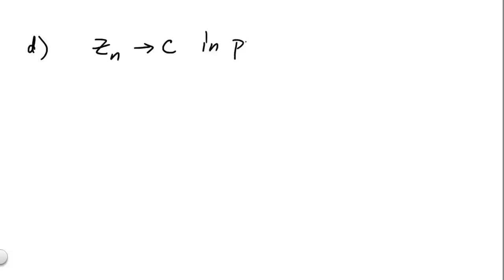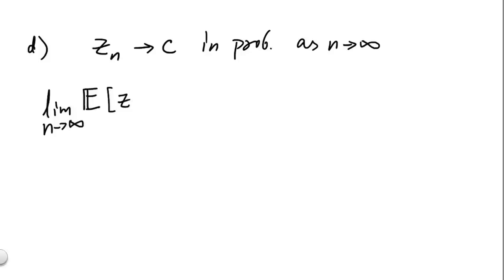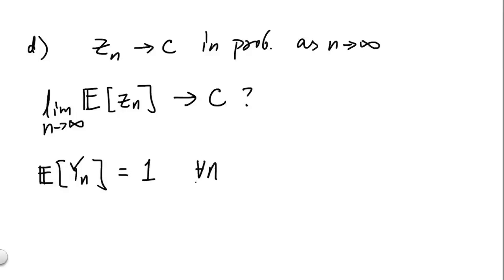For part d, we ask whether convergence in probability implies convergence in expectation — that is, if a sequence zn converges to c in probability as n goes to infinity, does the limit of E[zn] also equal c? Intuitively it seems plausible, since in the limit zn concentrates on c. Unfortunately, that is not quite true, and we have a counterexample right here with yn. We know E[yn] = 1 for all n, yet we showed in part c that yn converges to 0 in probability.